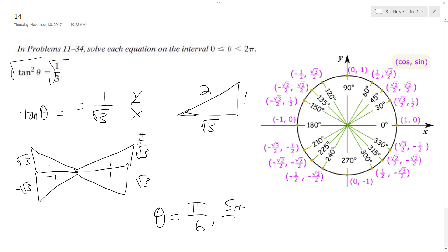five pi over six, and seven pi over six. Oh, and eleven pi over six.